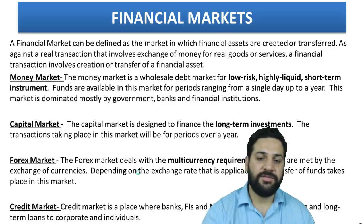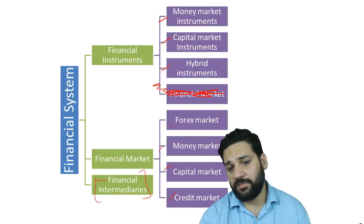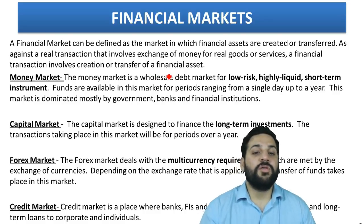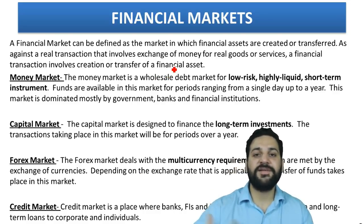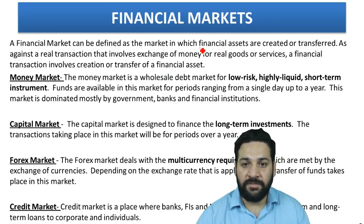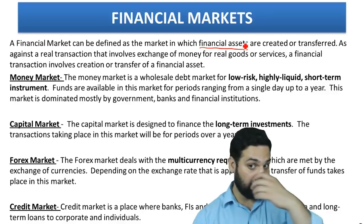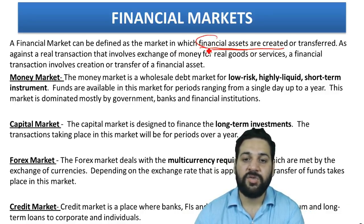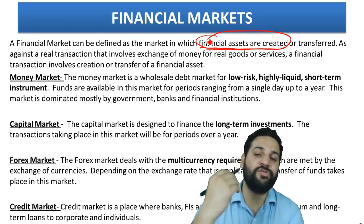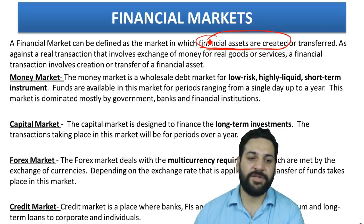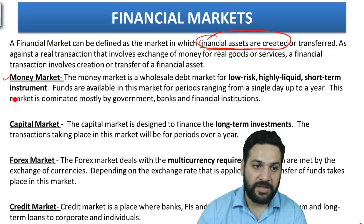We are going to discuss the financial market first, then the financial instruments, and finally the financial intermediaries. A financial market is not a physical market — it can be defined as a market in which financial assets are created and transferred. The various types of financial markets include money markets, capital market, forex market, and credit market.